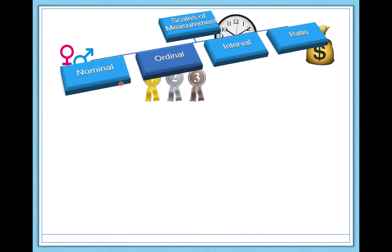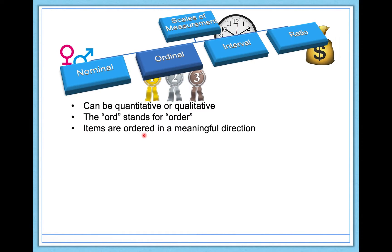Let's talk about ordinal scale data. It's going to build on nominal scale data. In this case, the data can be quantitative or qualitative. You might have numbers in your data set or you might have words in your data set. Here's the key thing behind ordinal scale data: the 'ord' stands for order, and so there's a key order to the data. The items in your data set need to be ordered in a meaningful direction. And here's where I have to mention this: the distance between items is not necessarily equal.